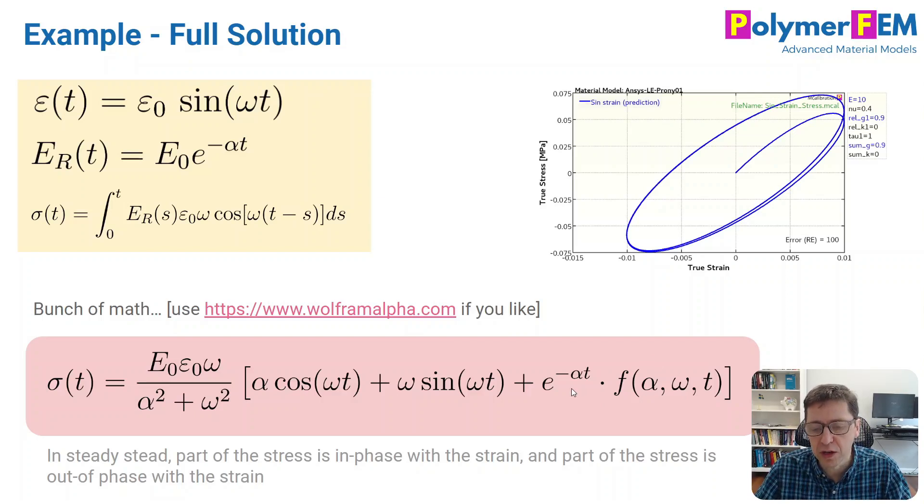And then there is another factor here that is an exponentially decaying factor. This is the transient solution that will go away, and this is a term that is important at short times, but at longer time at steady state, it will totally go away. So the stress will be proportional to a cosine term and a sine term.